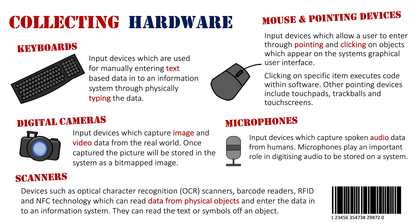The final area we'll look at today are scanners — not just in the traditional sense, but the whole variety of scanners. This includes devices such as optical character recognition (OCR) scanners, barcode readers, RFID readers, and NFC technology, which can read data from physical objects and recognize symbols based on those objects. In the case of a barcode, the way the black lines appear reflects a specific number, and that's what goes into the information system when scanned. That number then gets mapped against the database and it's able to recall a specific object. Essentially, they can read text or symbols off an object.